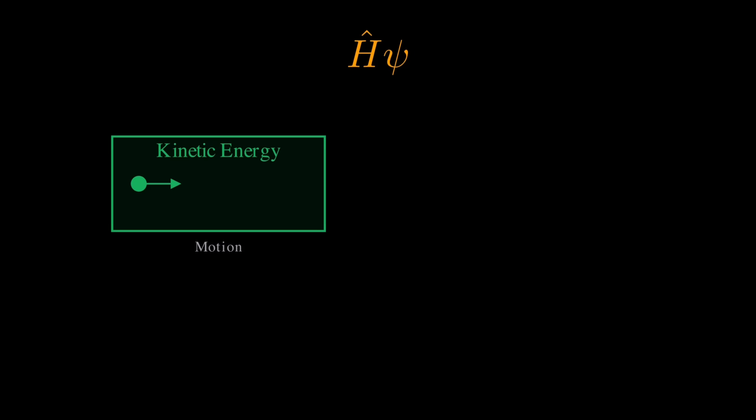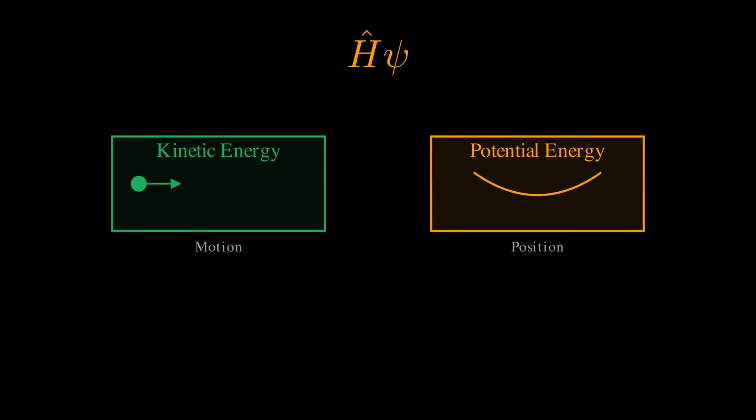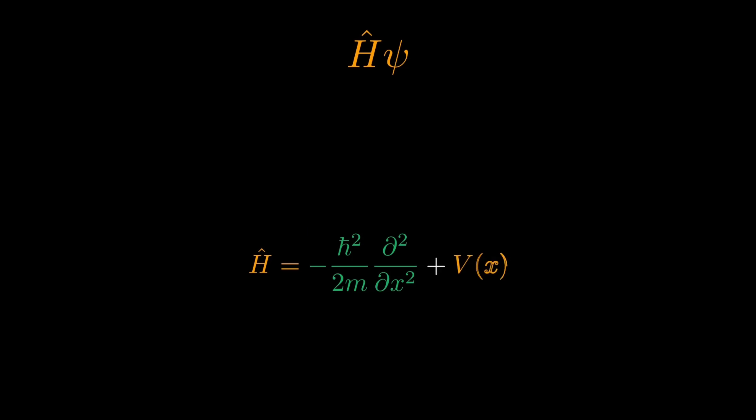The right side contains the Hamiltonian, represented by h-hat. This operator captures the total energy of the system. It has two parts: kinetic energy, which depends on how the particle is moving, and potential energy, which depends on where the particle is. For a particle in a potential V, the Hamiltonian looks like this: negative h-bar squared over 2m times the second derivative plus V of x.